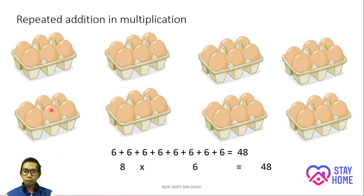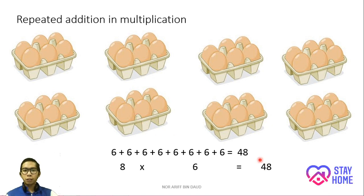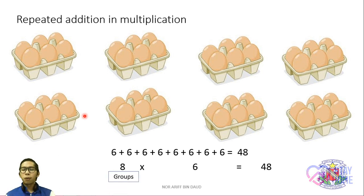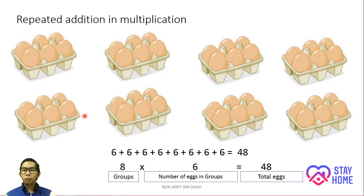8 times 6 equals 48. You must remember: 8 stands for 8 groups of carton, 6 stands for 6 eggs in each group, and 48 stands for the total of eggs we have here all together.